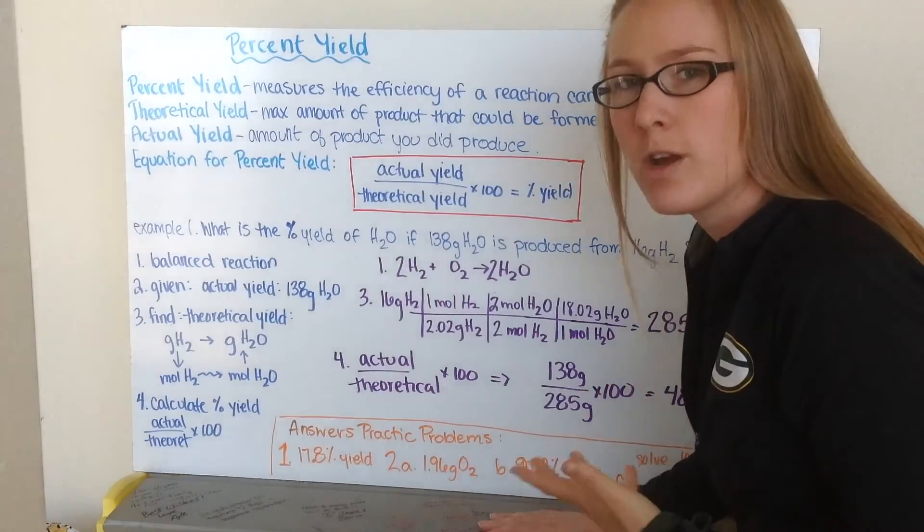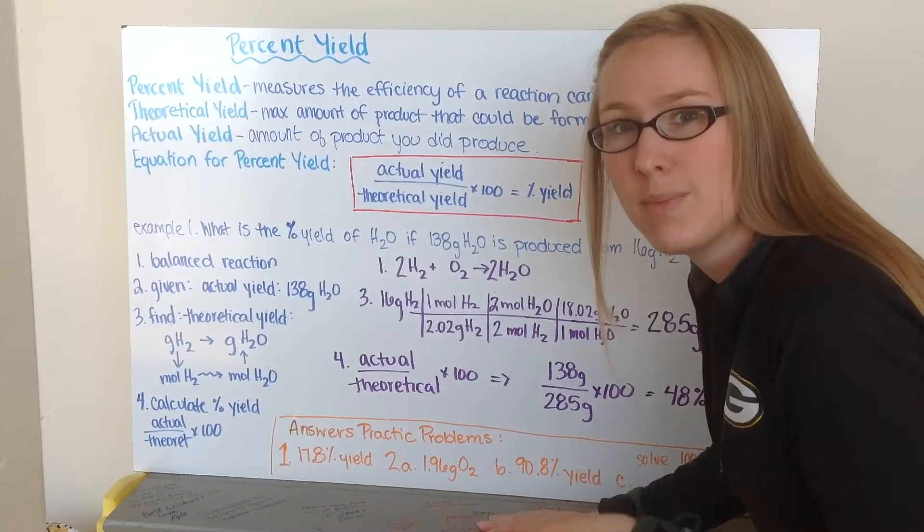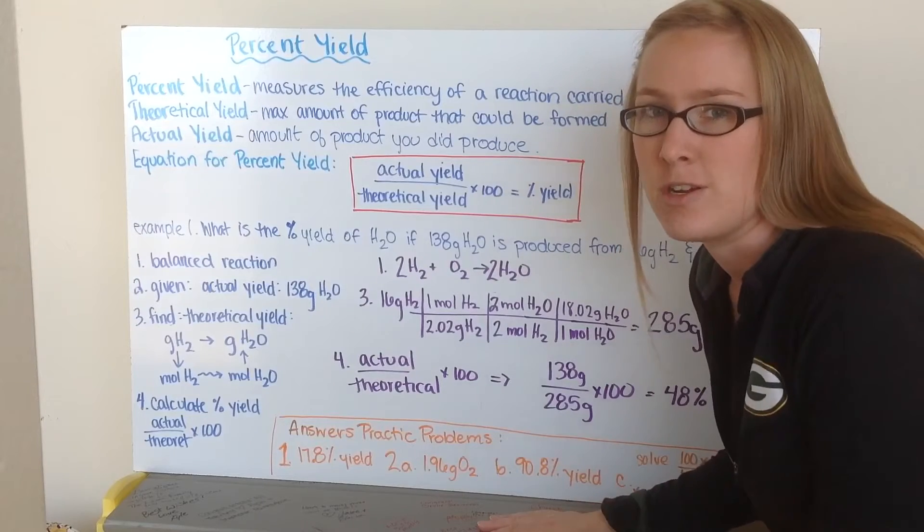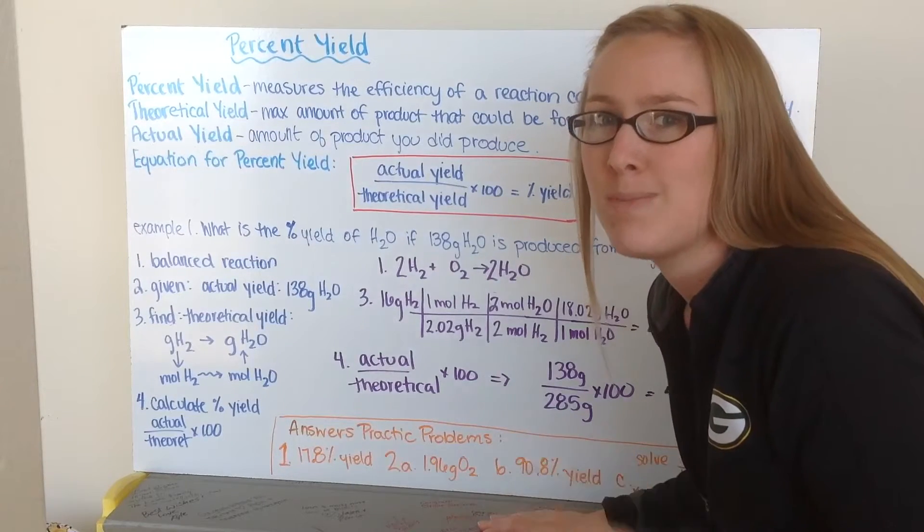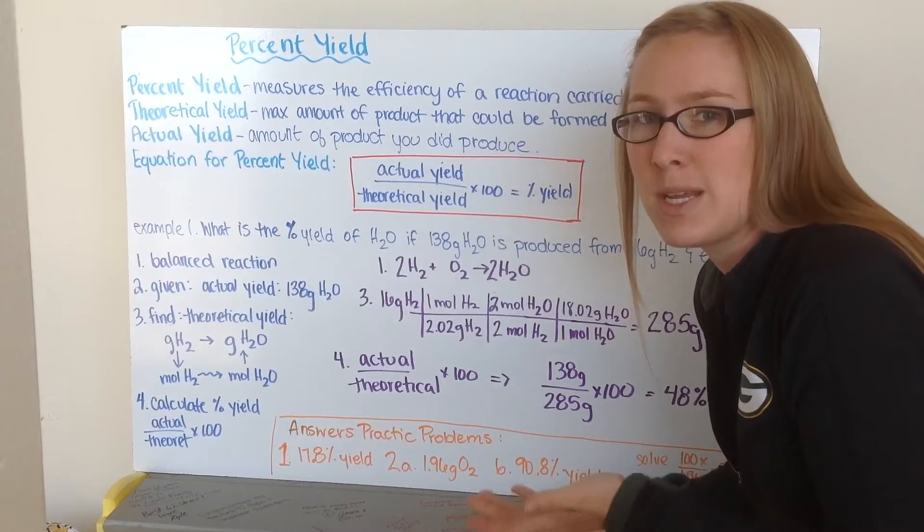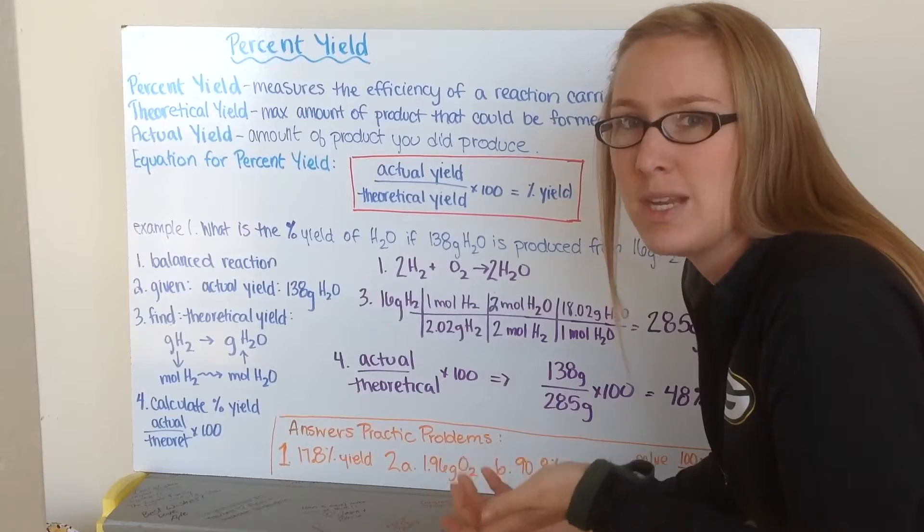We can figure out numerically how much of a specific product we are supposed to make by putting in so much of a reactant, but we all know that there are various sources of errors that can occur. Because of these sources of errors, we don't always make as much as we are predicted to, and therefore we can determine my percent yield, or how much I made out of how much I should have made. What percentage did I make?